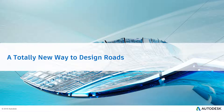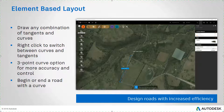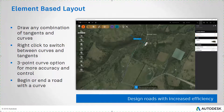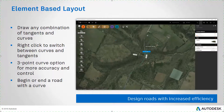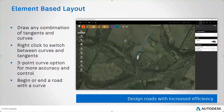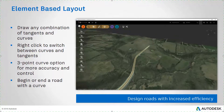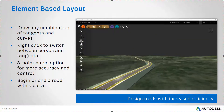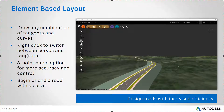And finally, probably the biggest news in this release: a new approach to road design and layout. In the latest release of InfraWorks, you'll find an entirely new way to design roads — element-based layout. With this new approach, you can create any combination of tangents and curves, including compound and reverse curves. Simply right-click to choose between tangents and curves as you draw. There's even a three-point curve option for more accuracy and control. You now have the full flexibility to begin or end a road with a curve. You'll find this way of designing much more effective than the previous PI-based approach, but that approach is still available if you choose to use it. This new approach allows you to design roads with increased efficiency and accuracy.